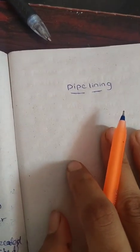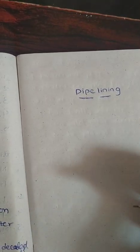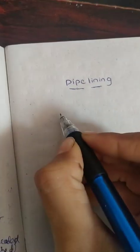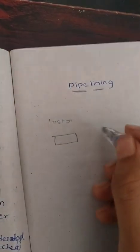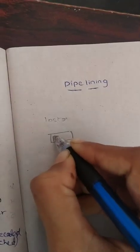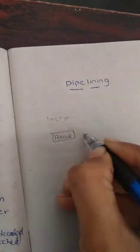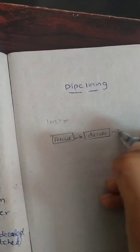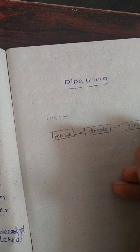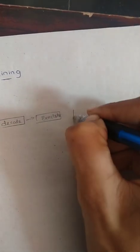Pipelining. What do you mean by pipelining? In earlier microprocessors, what would happen is before the next instruction is fetched, the first instruction needs to fetch, decode, and execute — then only the next instruction is fetched.